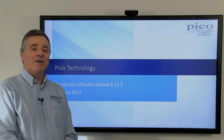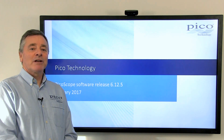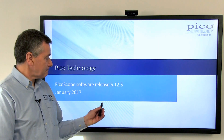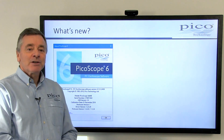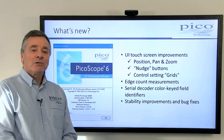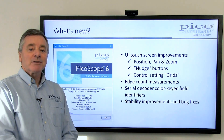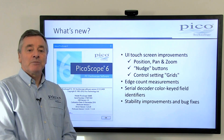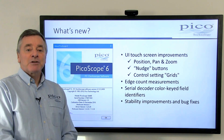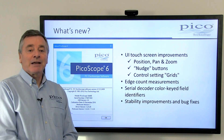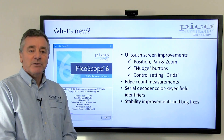Picoscope 6.12.5 is the latest software release for all users of Picoscope PC-based oscilloscopes. This version delivers user interface improvements for touchscreen users and mouse control, including nudge buttons and control settings grids for faster access to primary oscilloscope functions. A new edge count measurement function has been added, and serial protocols have been improved with color-keyed field identifiers. Let's have a look at each one of those in a bit more detail.